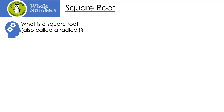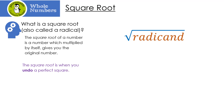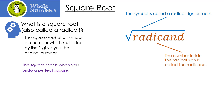The next topic is going to be the square root. What is the square root exactly? It's also called the radical. The square root of a number is a number which, multiplied by itself, gives you the original number. Square root is when you undo a perfect square. The symbol is called the radical sign or radix. The number inside the radical sign is called the radicand. We read it as 'the square root of x.'